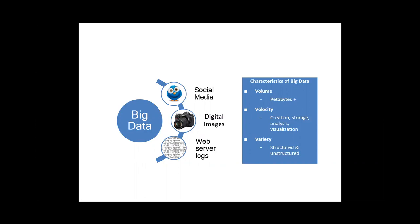The kind of data we're accustomed to working with in the library tends to be structured — the kind of data that fits in a relational database, or that you work with in a spreadsheet. It's very ordered and quite easy to analyze. But big data is often comprised of unstructured data as well. Social media, digital images, web server logs are all examples of unstructured big data — not the kind of data we're used to dealing with.